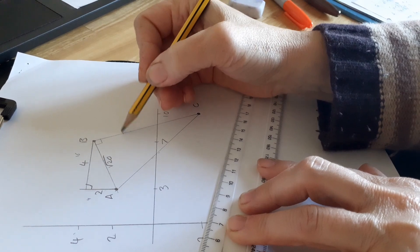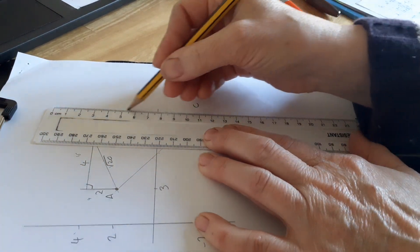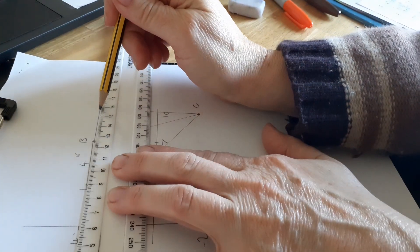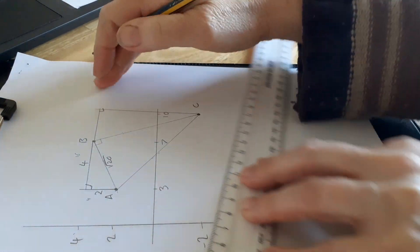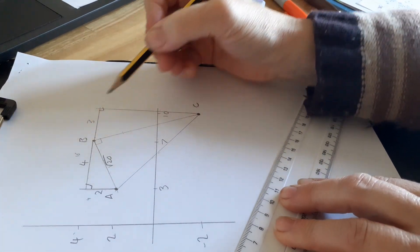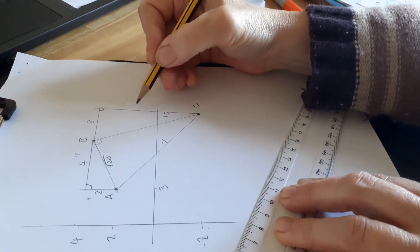I'm going to do the same thing here. This is a right angle triangle. This distance here is 3. This distance here is the difference between 4 and minus 2, so that's 6.